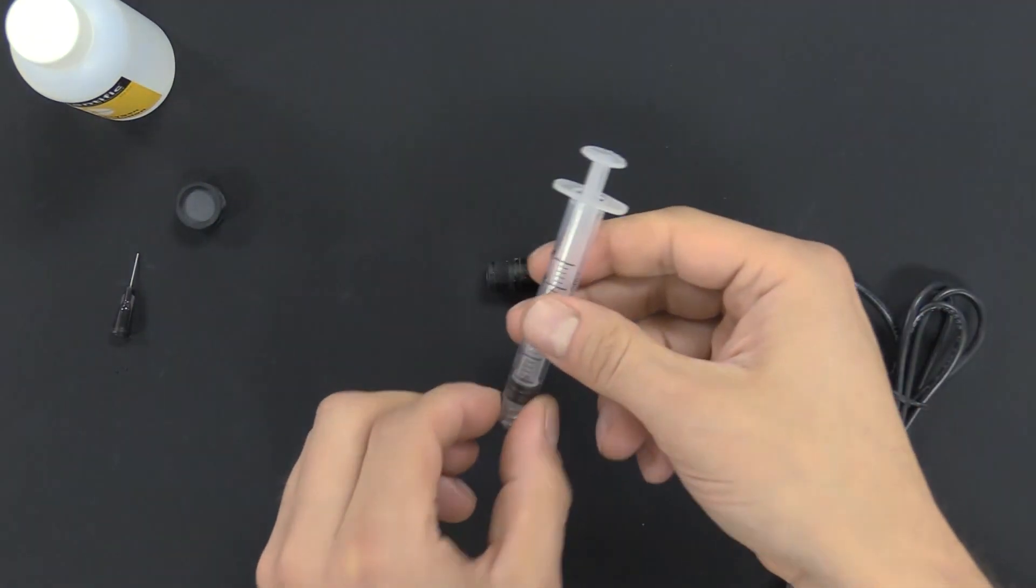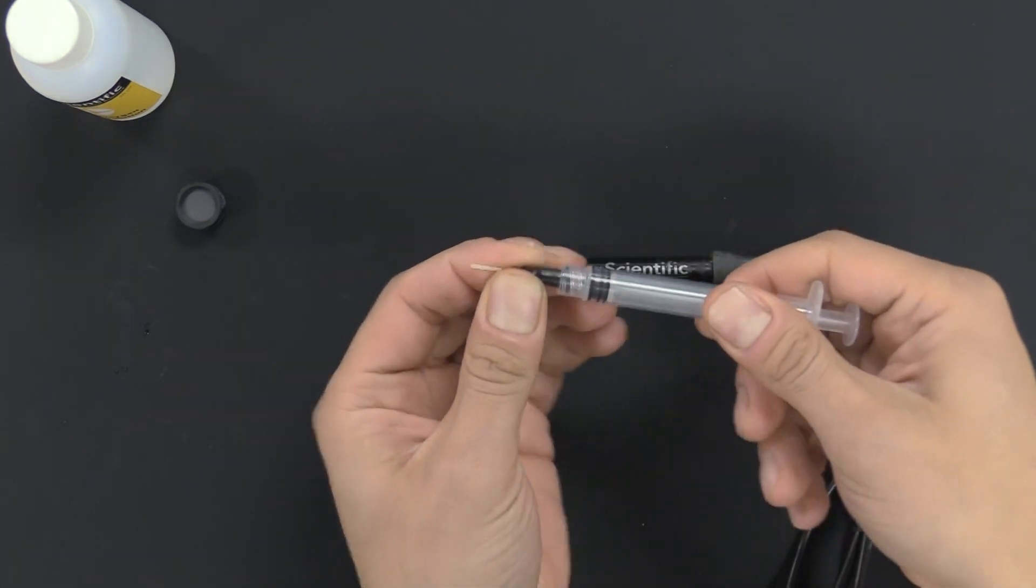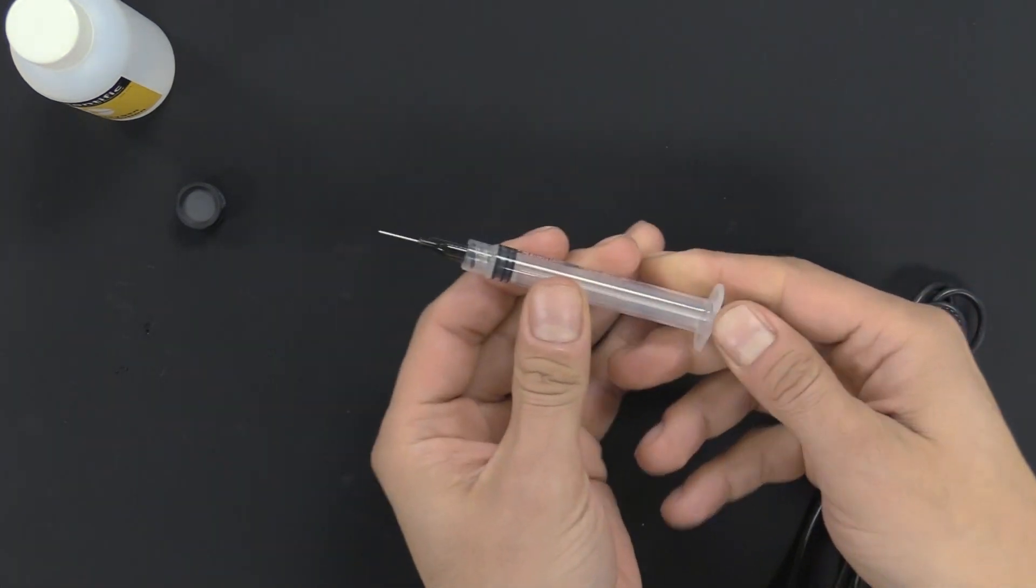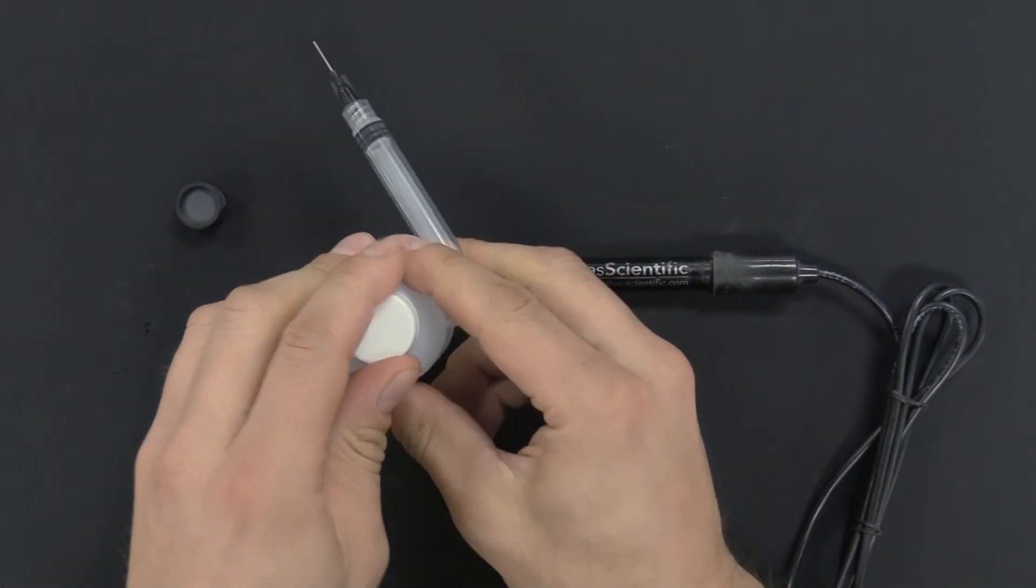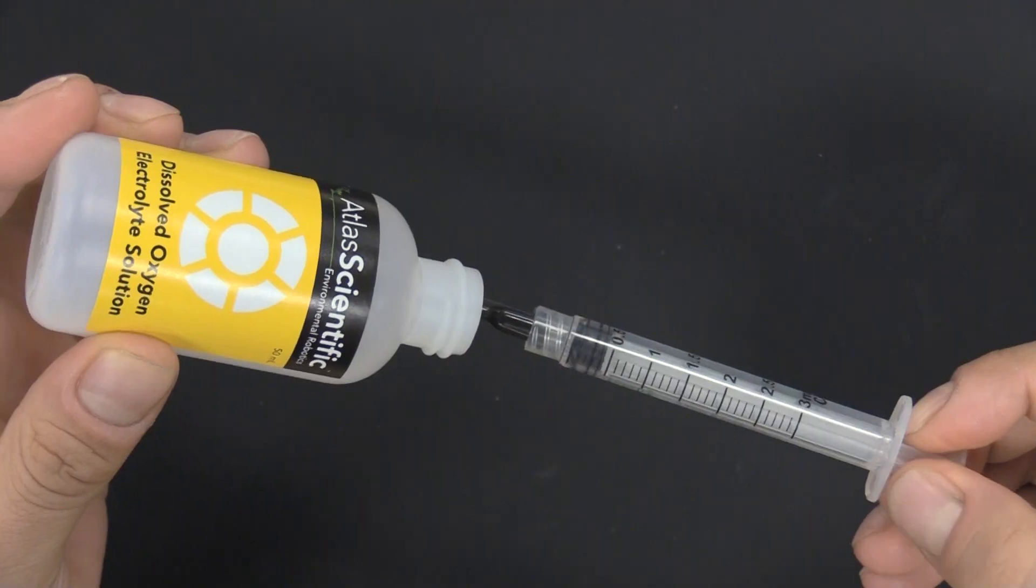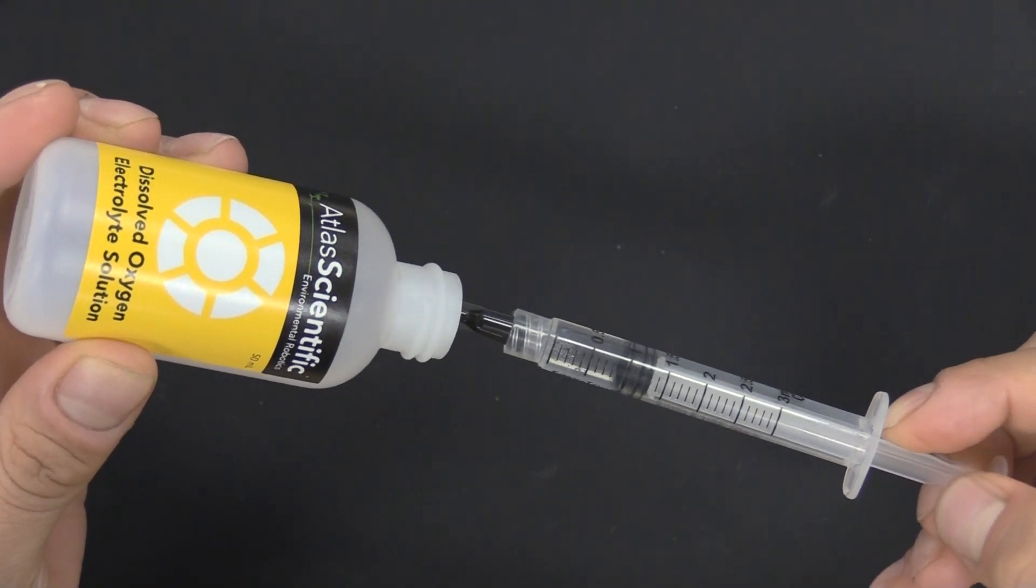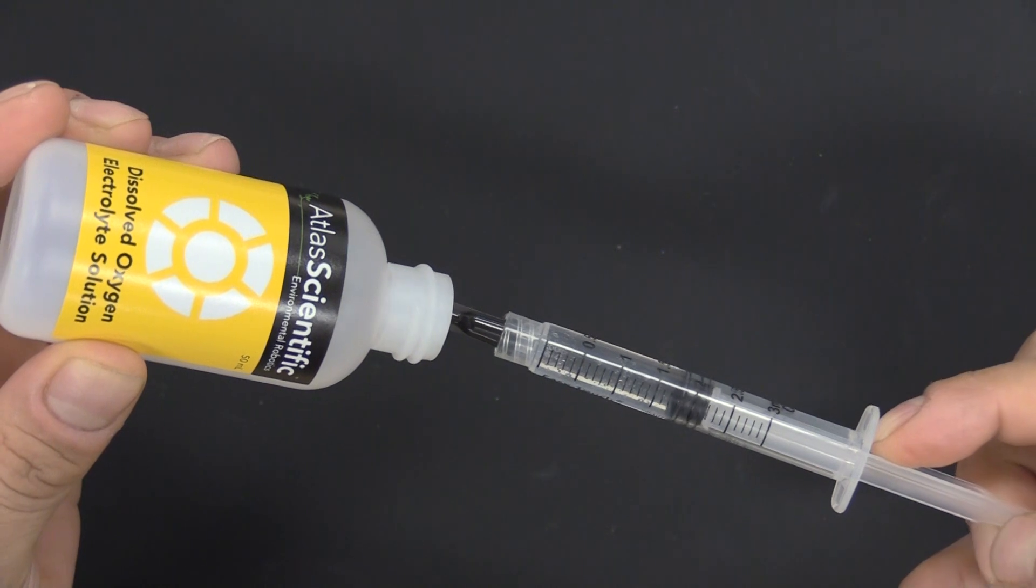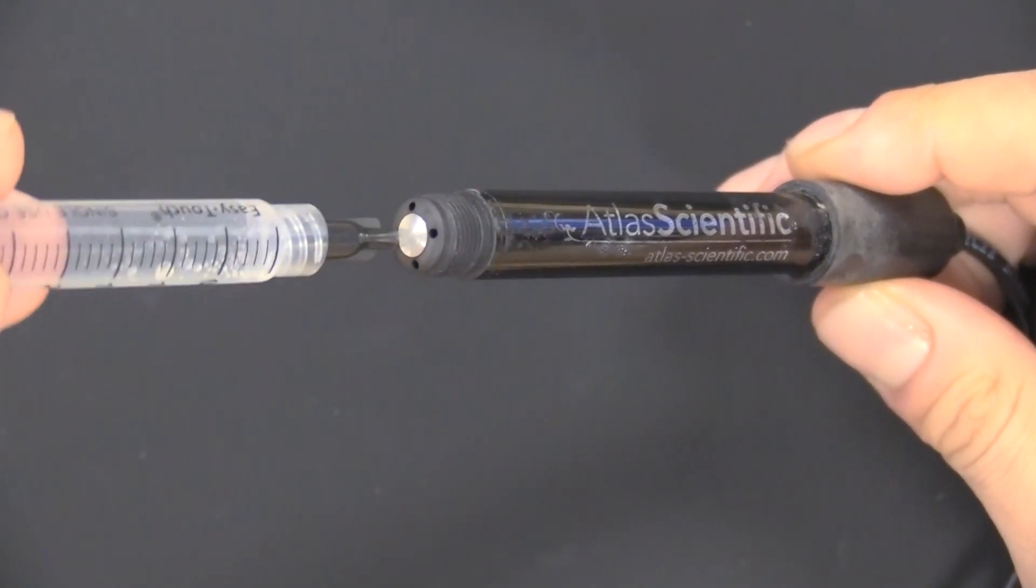Take the syringe and attach the blunt tip adapter. It's not sharp, so it can't cut you. Take the electrolyte solution and draw up a full syringe of electrolyte. If you see some crystals in this solution, don't worry about it. It's not a problem.